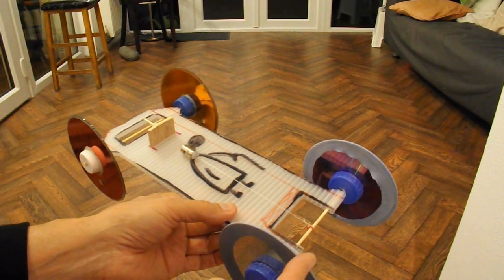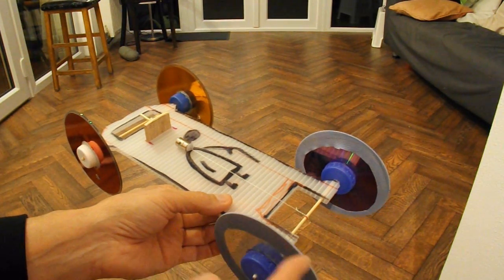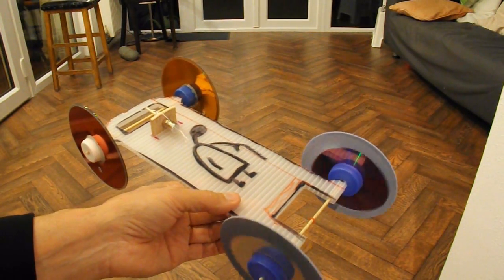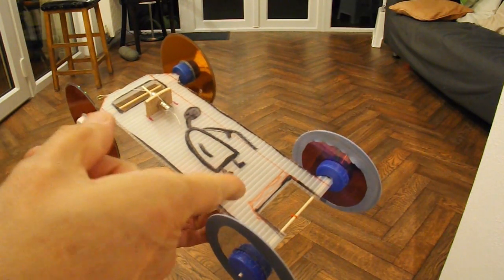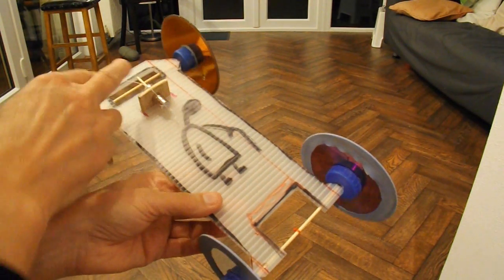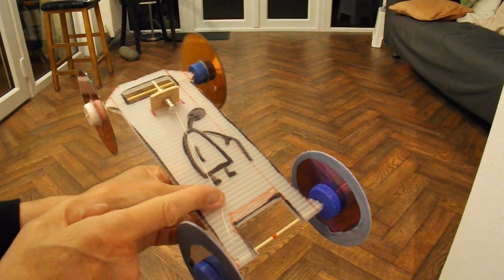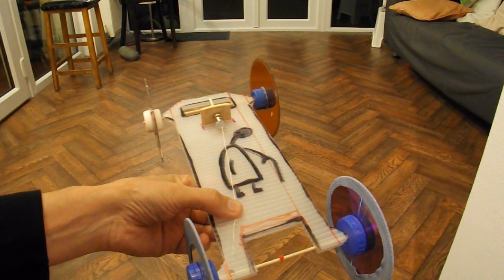If I ease it forwards gently, it'll come to a point, there we go, it pulled itself forwards. So I'm going to do the same thing on the floor. I'll set it up and then gently move it forwards until it gets to that tipping point, and then it'll move on on its own.